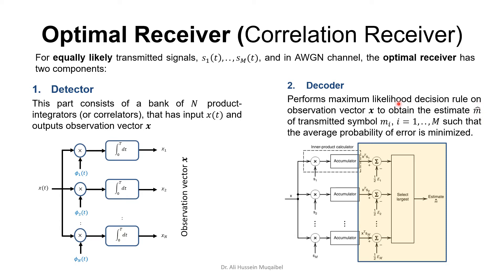Our estimate will tell us what was transmitted as the best guess such that the average probability of error is minimized. To summarize: an optimum receiver under these assumptions is a correlator receiver — a product integrator or inner product calculator — followed by a decoder that specifically uses a maximum likelihood decision rule that maximizes the likelihood or minimizes the error probability.